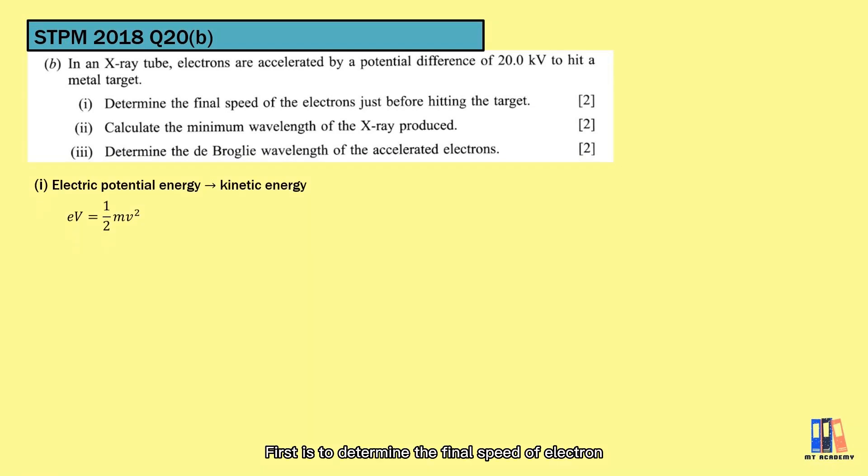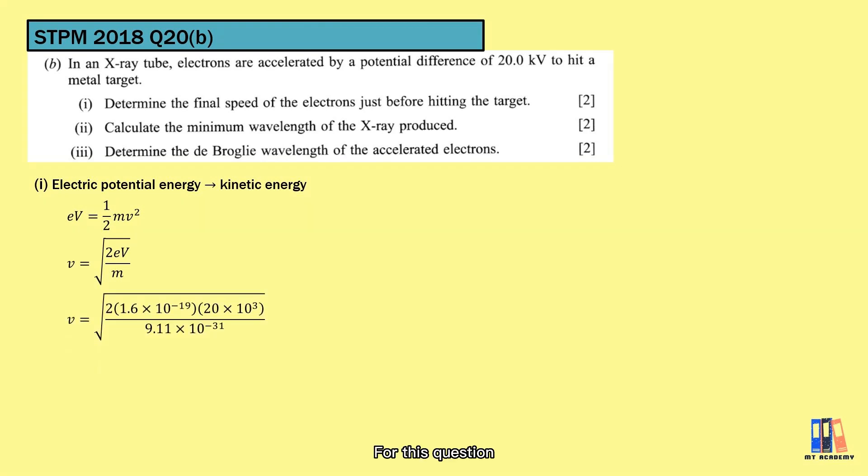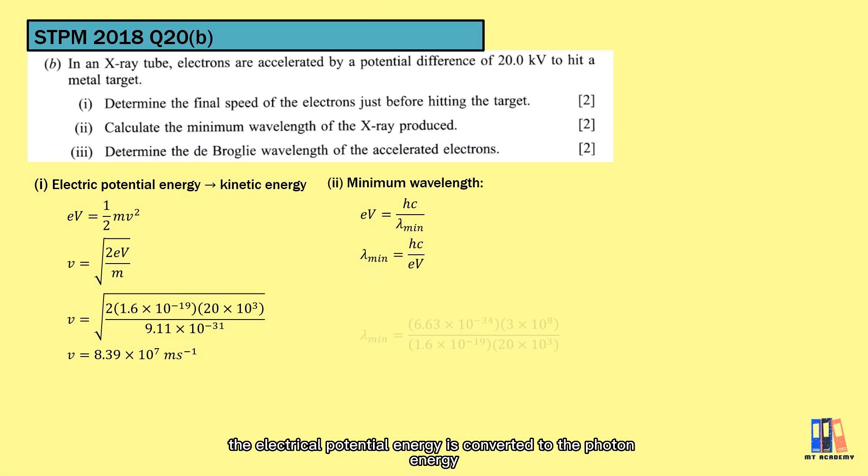First is to determine the final speed of the electron, and we have learned about the energy conversion. For this question, we can consider the electric potential energy converts to the kinetic energy. Next is about the minimum wavelength, which is exactly what we have discussed. The electric potential energy is converted to the photon energy.